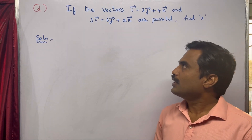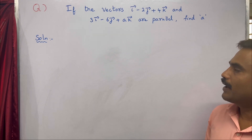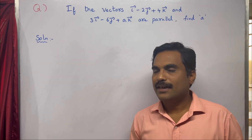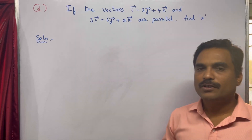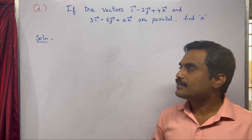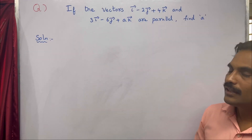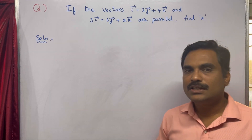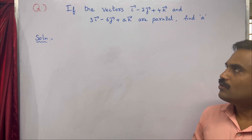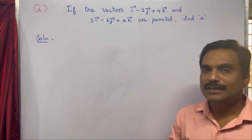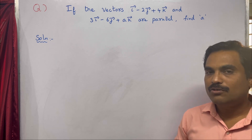and 3i̅ minus 6j̅ plus ak̅ are parallel, find a. Here they have given two vectors. Take the first vector as a̅ and the second vector as b̅. The given condition is that both vectors a̅ and b̅ are parallel vectors, and using that condition you need to find the value of a.